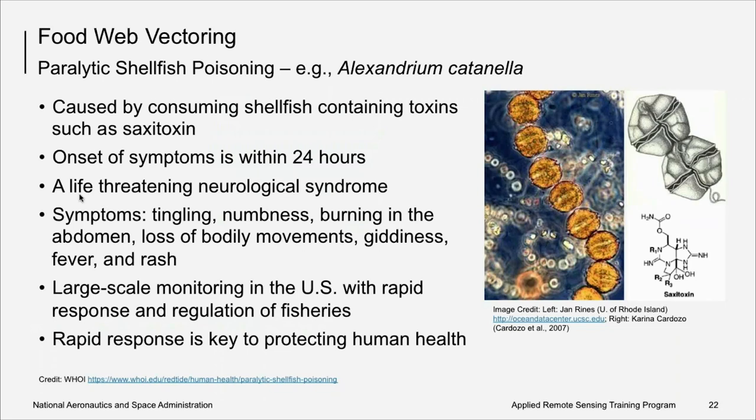Another way algal blooms can be harmful is through vectoring of toxins through the food web. If tainted food is consumed, it can cause a number of poisonings and syndromes as mentioned earlier. One of these is paralytic shellfish poisoning by the algal toxin saxitoxin. If a person eats food containing this toxin, symptoms appear within 24 hours and include tingling, numbness, burning in the abdomen. This is a potent toxin that can cause death. And so as a result, the presence of potentially toxic cells and the toxins themselves are widely monitored in U.S. waters. If it is detected, fisheries are closed to harvest to protect the integrity of the fishery and more importantly, the movement of the toxins through the food web to humans.